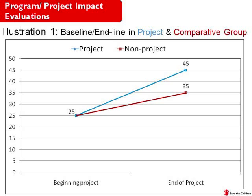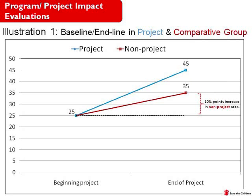The graph now shows two lines. The blue line shows the baseline and endline for our project participants, with immunization increasing from 25% at baseline to 45% at the end of the project. The red line shows a group of children who were not participants — a comparative group — who also had 25% immunization coverage when our project started, and at the end of our project, even though they didn't participate, it still increased to 35% coverage, possibly due to other factors.